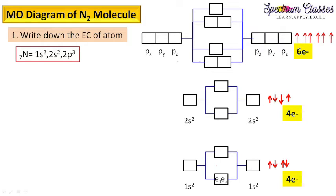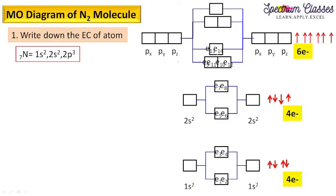Now we fill the 14 electrons into the molecular orbitals. Electrons 1 and 2 fill the first molecular orbital, then 3, 4, 5, 6, 7, 8, then electron 9. Here it is important: electron 9 goes to the left-hand pi orbital, and electron 10 goes to the right-hand pi orbital. Then 11 pairs with 9, and 12 pairs with 10. Students sometimes make the mistake of filling 1, 2, 3, 4 into the same orbital — that is incorrect. So the correct order is electrons 9, 10, 11, 12, then 13 and 14, following Pauli's exclusion principle with opposite spins.